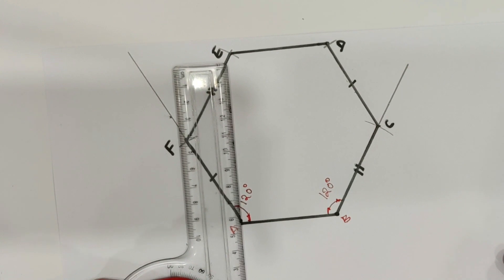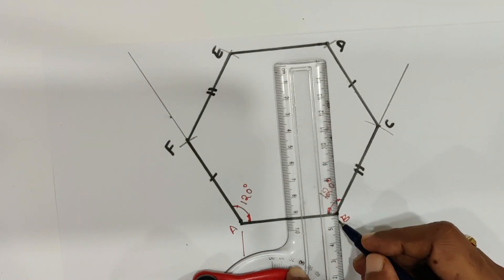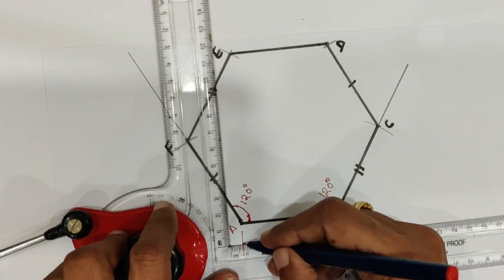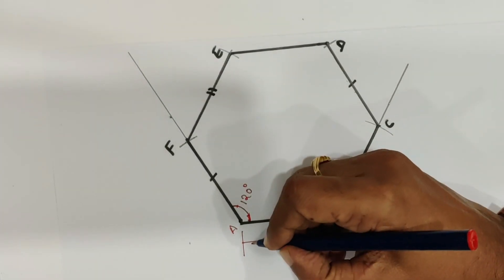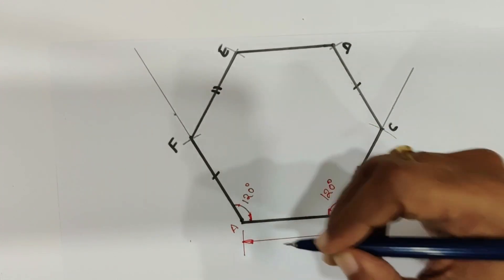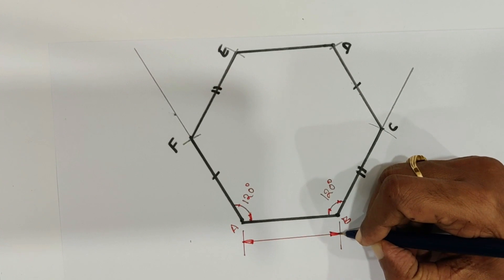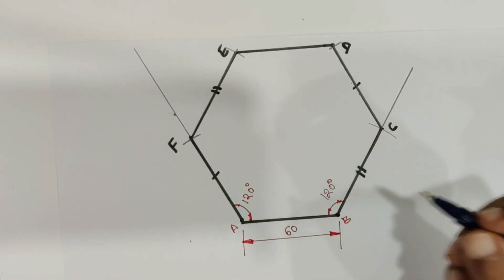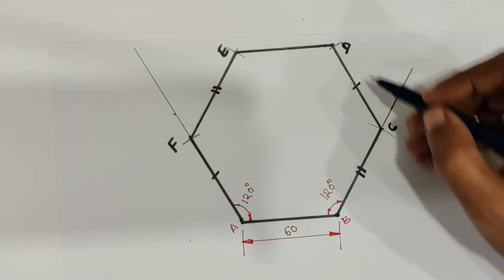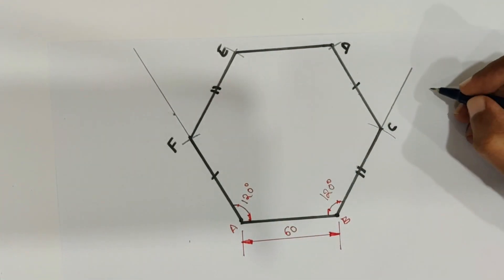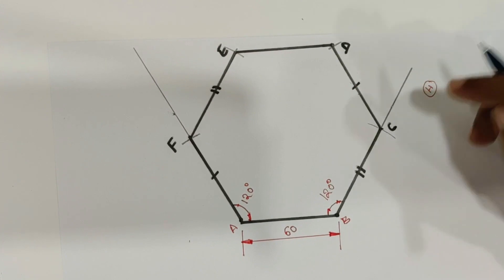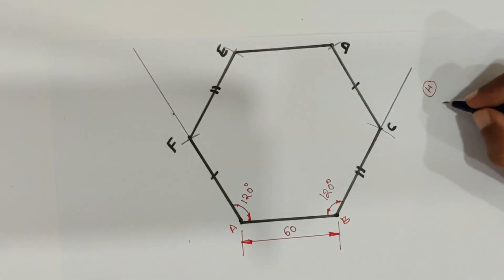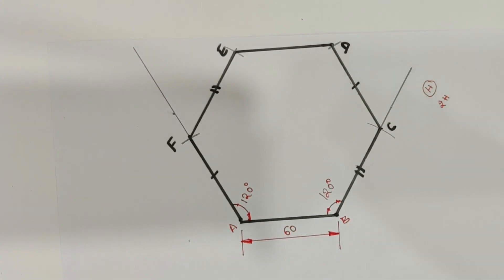We will do the dimensioning now. Lines A, B, C, D, E, F are drawn with H pencil. Dimensioning lines and construction lines are drawn with 2H pencil. That's about the construction of a hexagon with the given side length using the angular method.